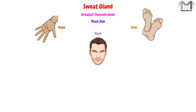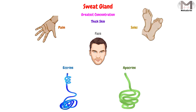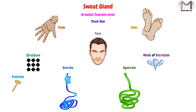If we classify the sweat glands according to their types, they are classified into two major types: the eccrine sweat glands and the apocrine sweat glands. These two types differ in their structure, function, mode of excretion of their products, and also in their anatomical distribution.